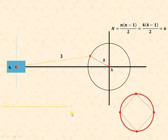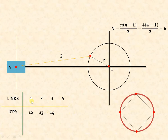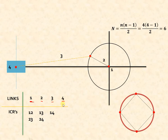First, write down the link numbers: one, two, three, four. Then write down the corresponding ICRs in this fashion, starting from one: 1-2, 1-3, 1-4, then 2-3, 2-4, and finally 3-4. There are six ICRs because the formula for the number of ICRs is N = n(n−1)/2, where n is the number of links. With four links: 4×3/2 = 6 ICRs.